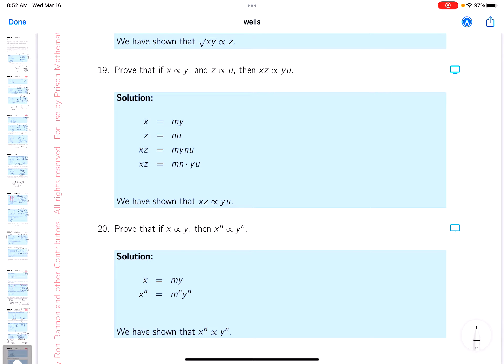Problem 19 says that x is proportional to y. I'll write this as x equals some multiple of y. And it says z is proportional to u, so z equals some multiple—I don't know what the multiple is yet.